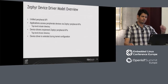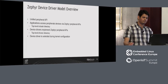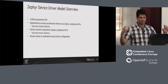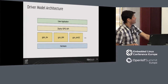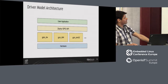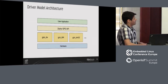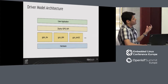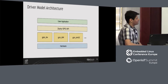During kernel configuration, you select which driver you want to use, and then that driver is exposed via the common API. This diagram illustrates the example with GPIO — you have the Zephyr GPIO API on top, the user application sits on top of that, and under the API you have different device driver implementations, with the hardware layer at the bottom.